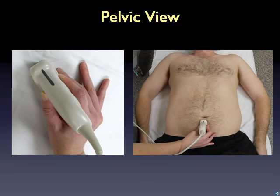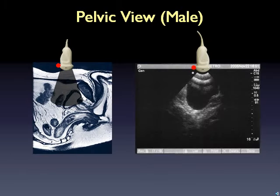The pelvic view. Grasp the probe low down, pressing the heel of hand against the patient — hold the probe like a pencil. Place the probe just above the pubic symphysis, well below the umbilicus, indicator towards the patient's head. The probe face may be angled inferiorly into the pelvis to enhance the view. This view is best accomplished with a full bladder; an empty bladder may decrease your ability to see small fluid collections and should be noted as a limitation.